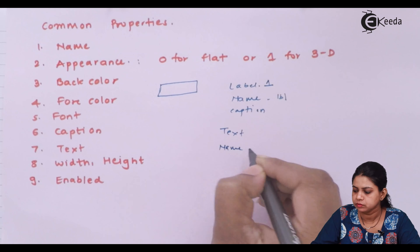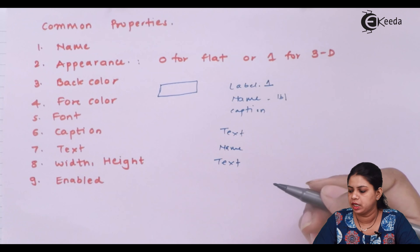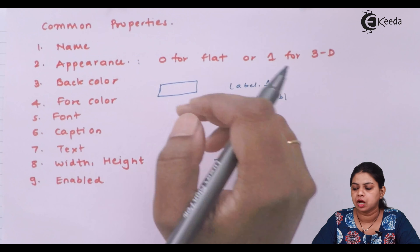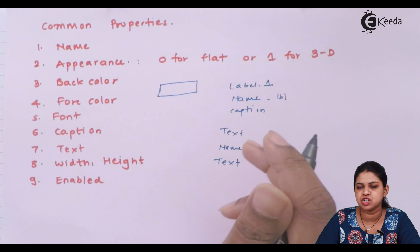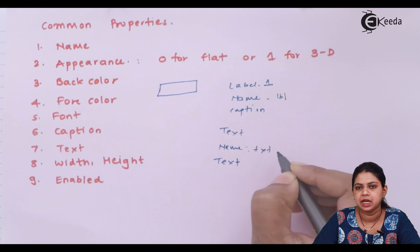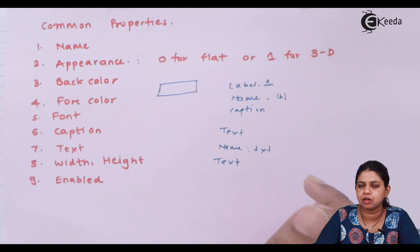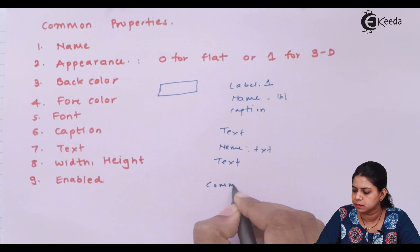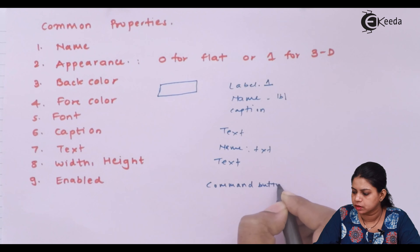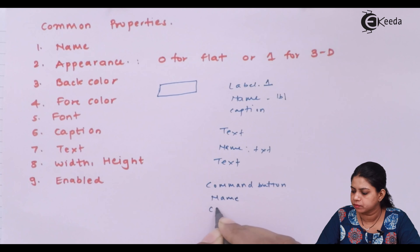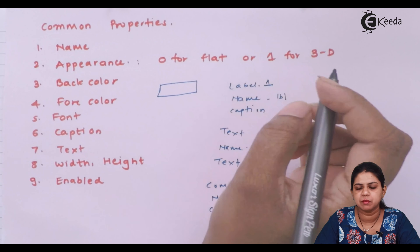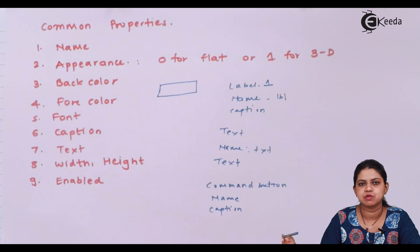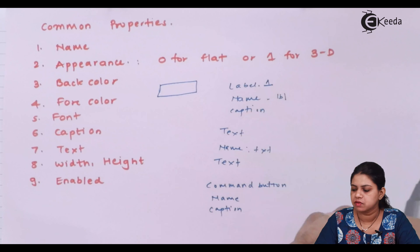Text box has the properties name and text. The text property is used when you want to enter or change the text inside the text box. The name property is used to change the name of the text box. When changing the name of a text box, we use the abbreviation 'txt'. Command button also has name and caption properties. To change the name of a command button, we use the abbreviation 'cmd', followed by the name. The caption property is used to change the caption of the command button.